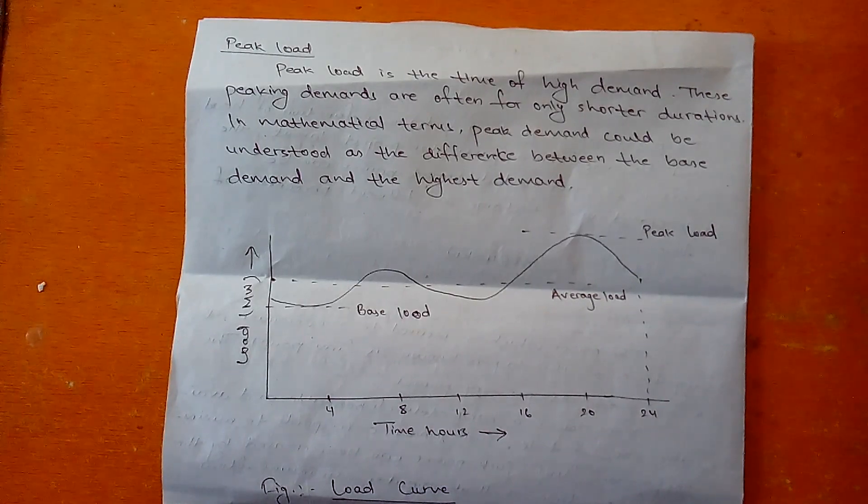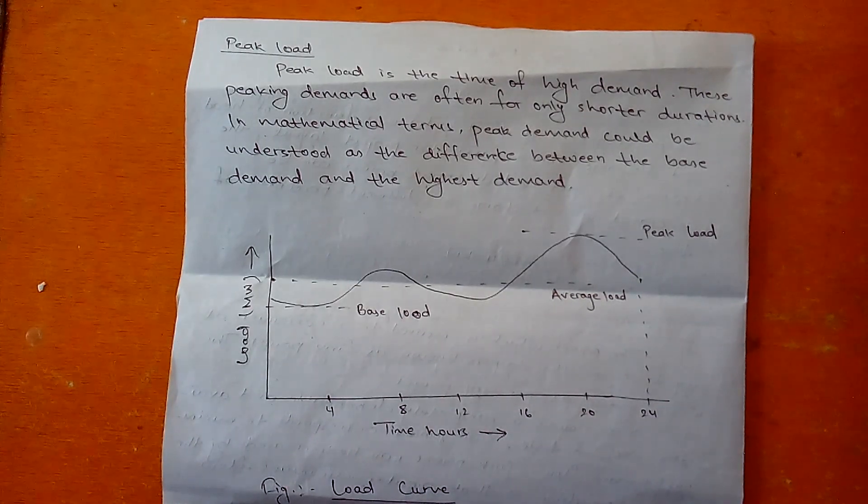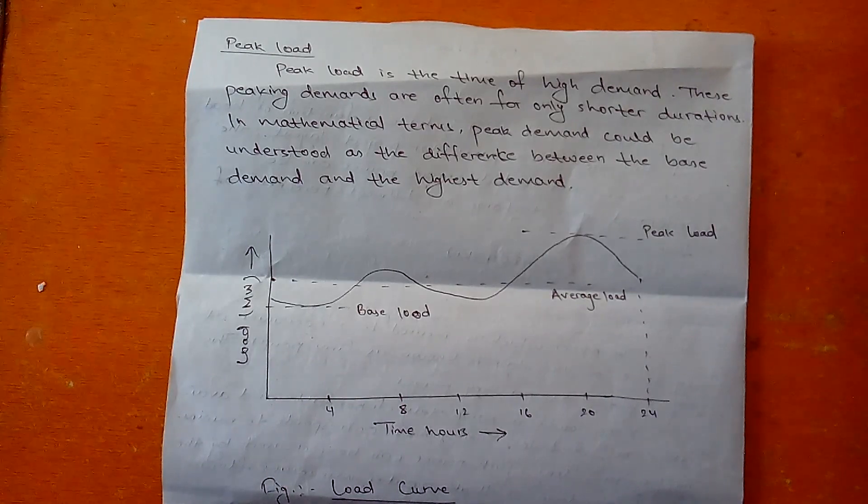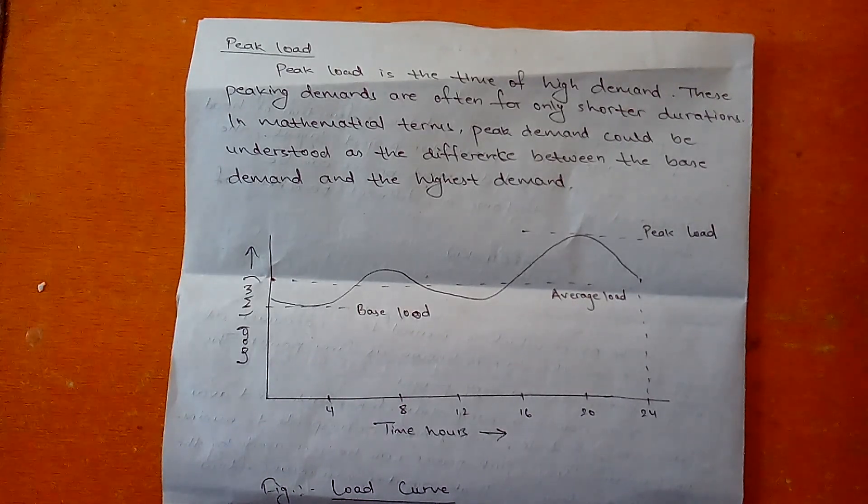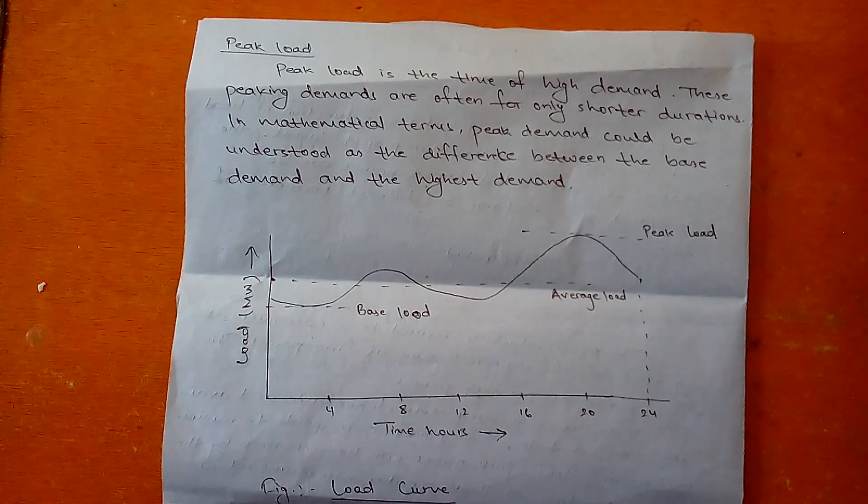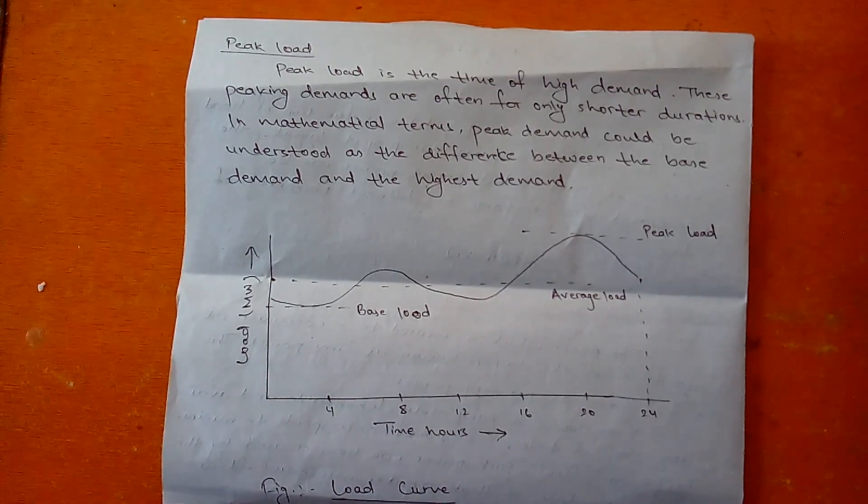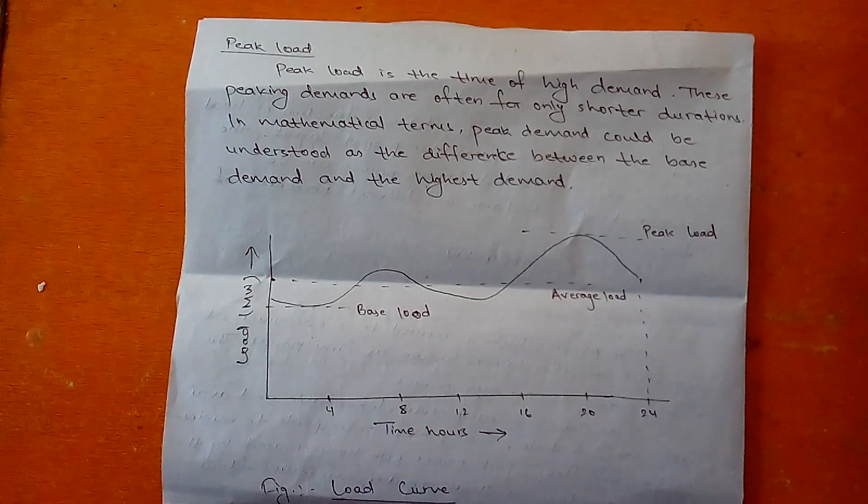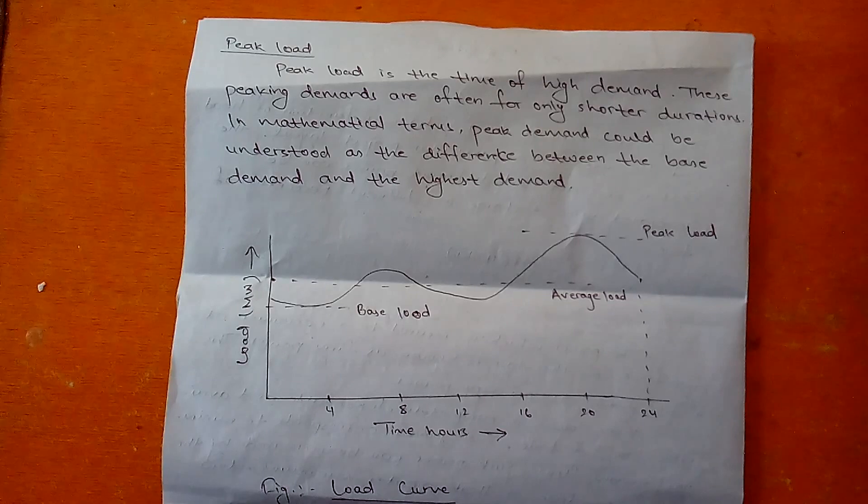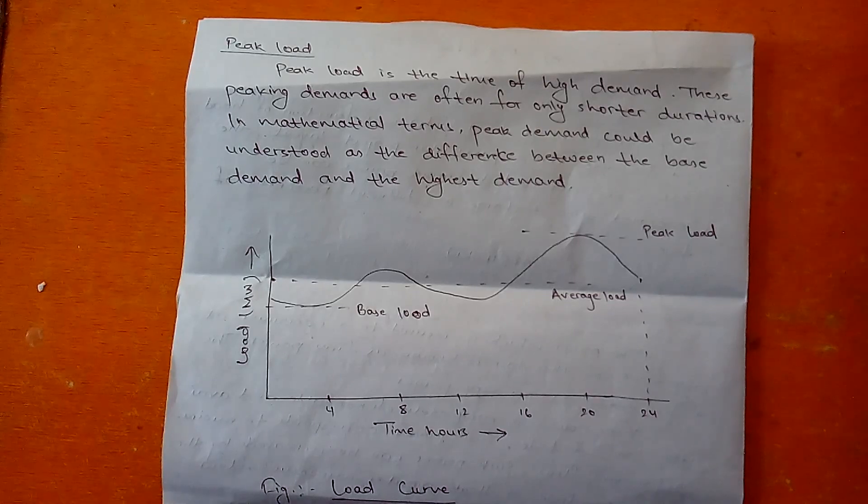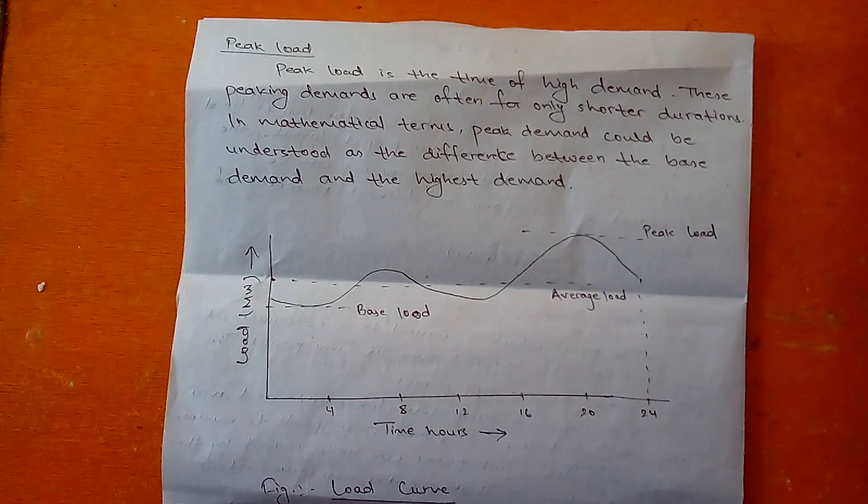In mathematical terms, we can say peak demand could be understood as the difference between the base demand and the highest demand. For example, during the operation of industries and other kinds of factories, the need for electricity will be very high.